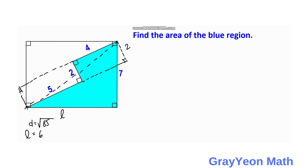We label this line as x, and the adjacent segment as y. Since the total is 7, the remaining part is 7 − x. The height dimension is 9 and the length we found is 6.